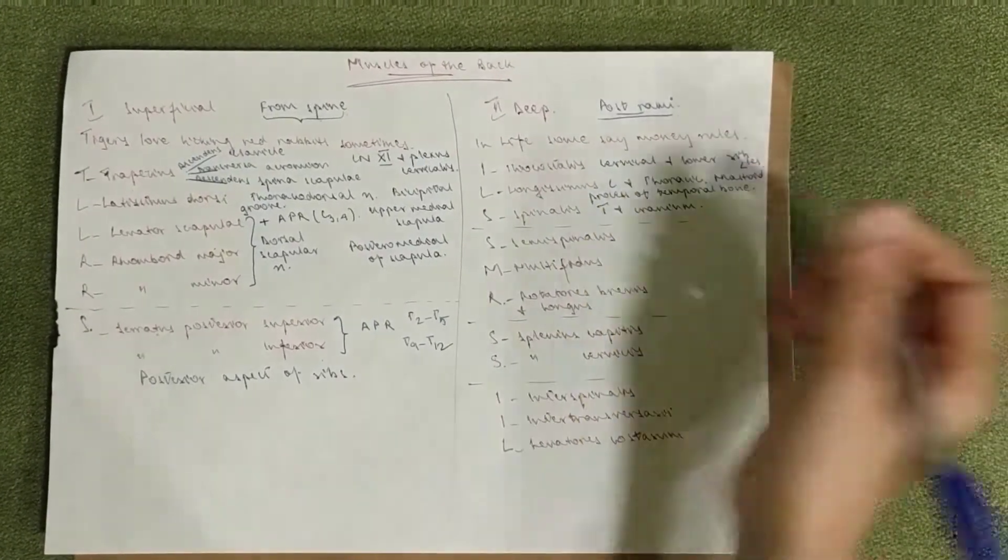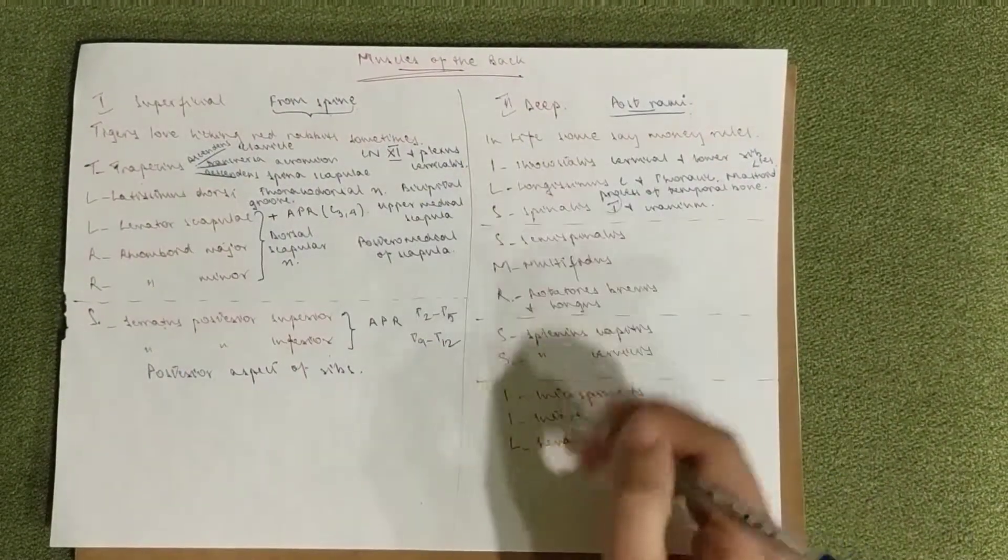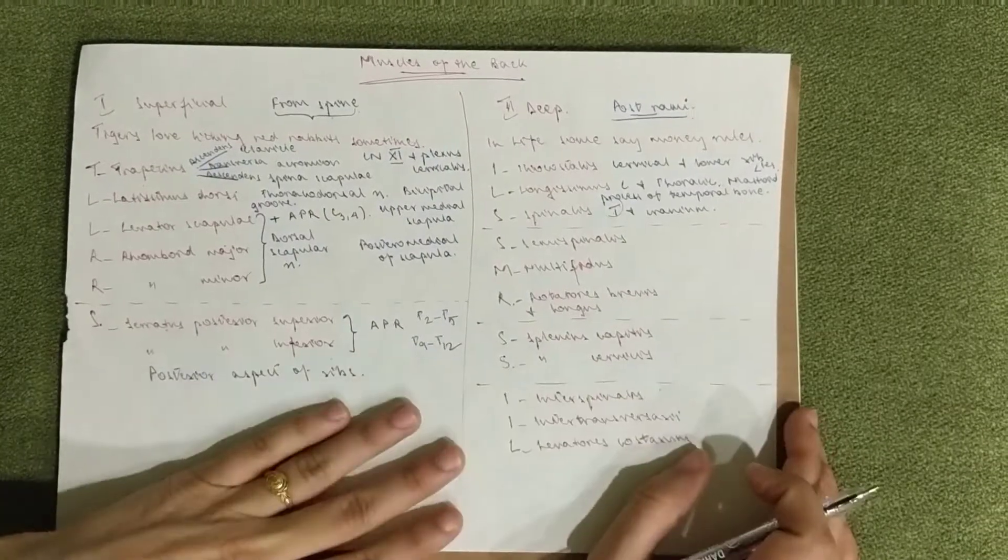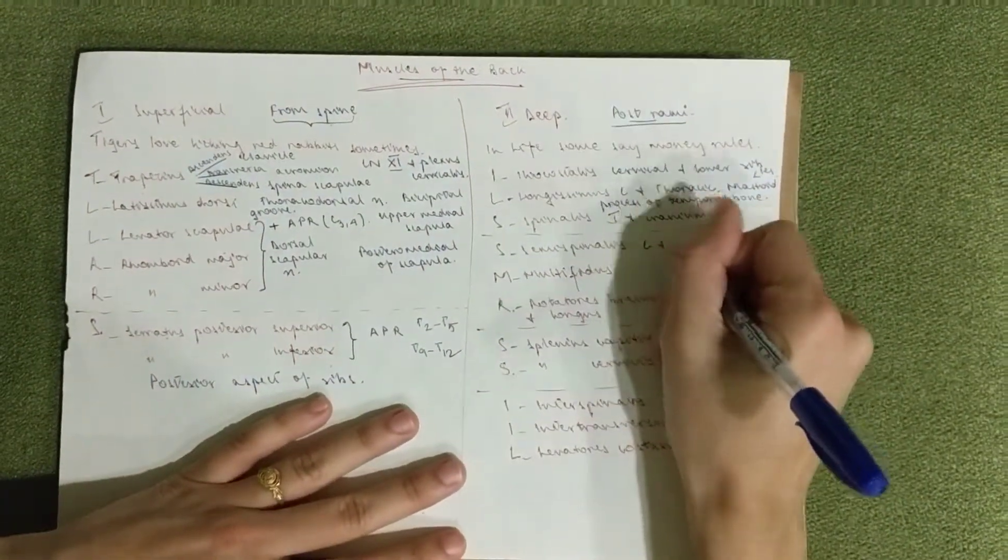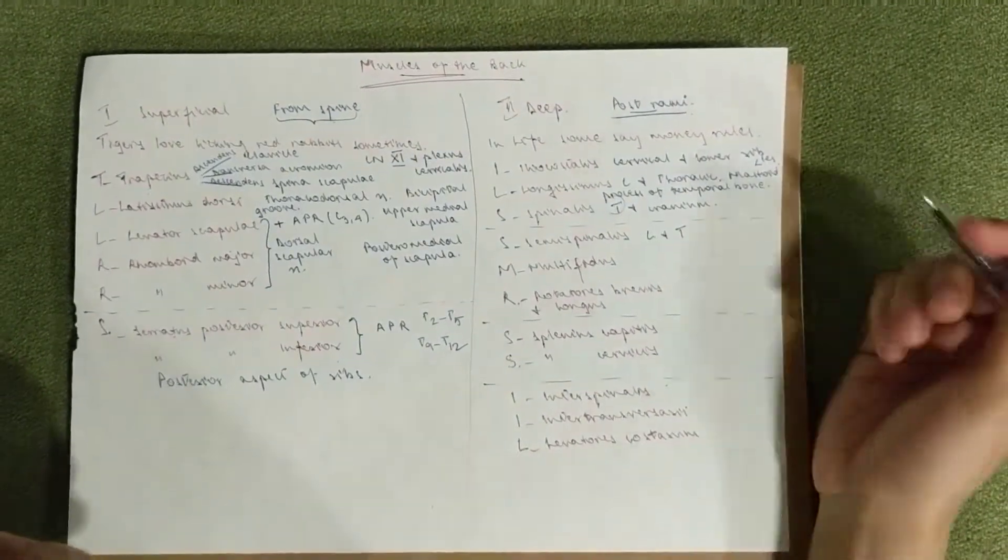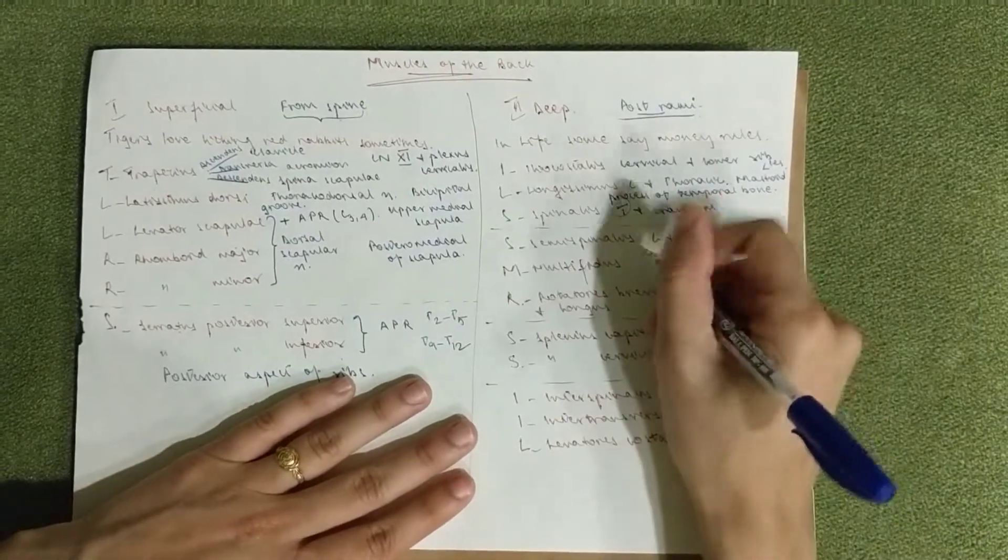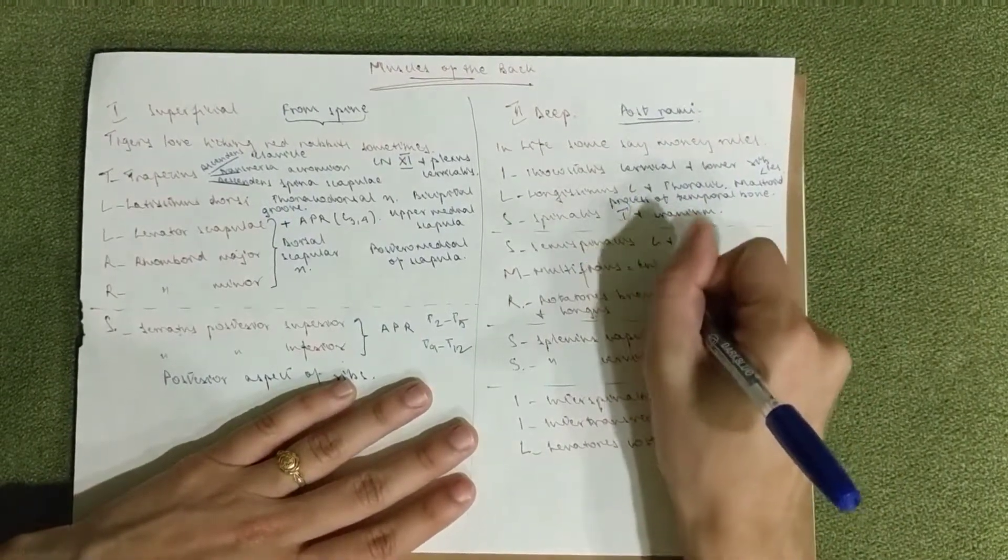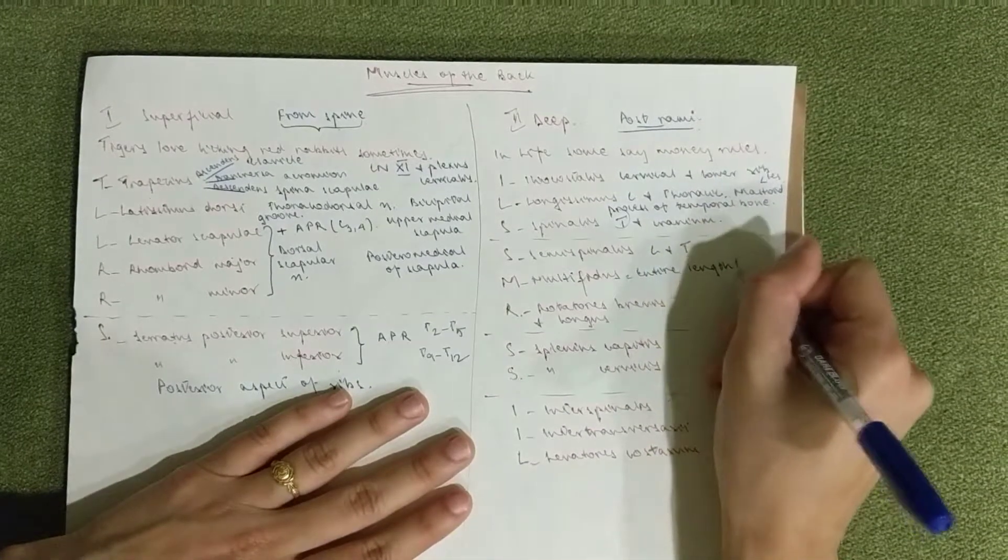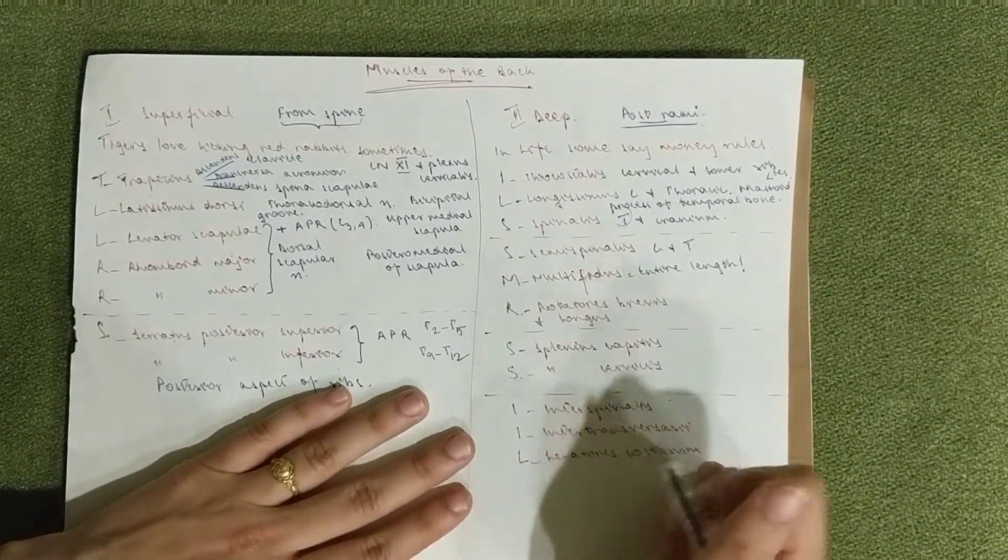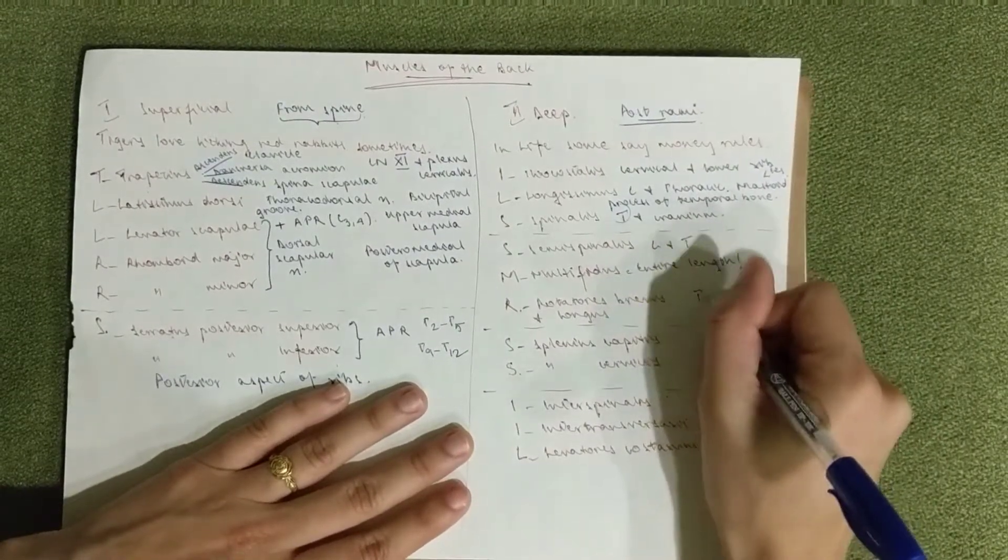The semispinalis goes to cervical and thoracic spinous processes. The multifidus goes along the entire length of the spine to the spinous processes of the entire vertebra. The rotatores brevis and longus go to the thoracic only.